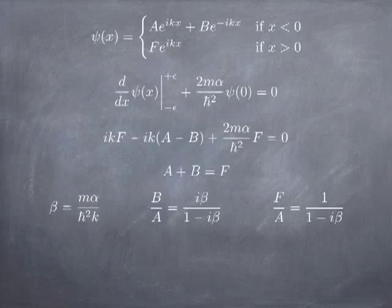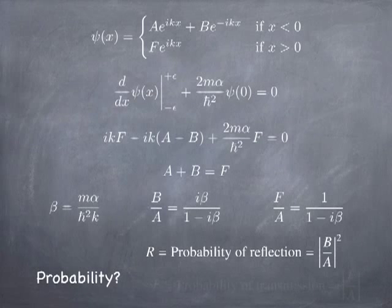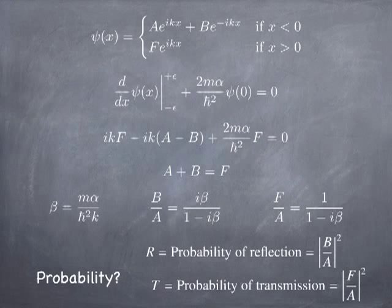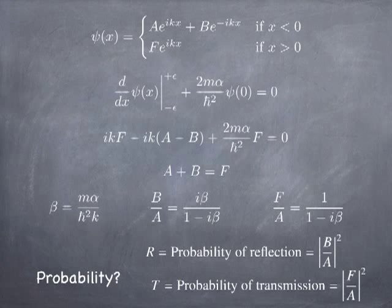The probability of being reflected is equal to the magnitude squared of the ratio b to a, and the probability of being transmitted is the magnitude squared of f to a. What I like to do when solving these problems is to just set a equal to 1, because all we ever get out of the analysis is the ratio of b to a or f to a — so you might as well set a to 1 and solve for b and f.